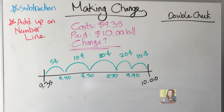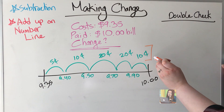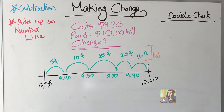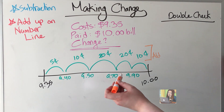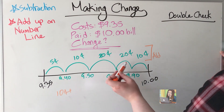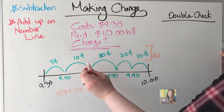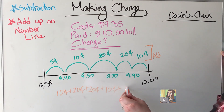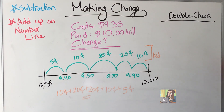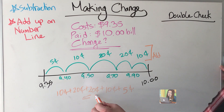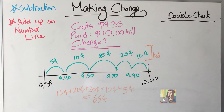Now I take all the numbers from those jumps and add them up — that total is the change. So: ten cents plus twenty cents plus twenty cents plus ten cents plus five cents. Ten plus twenty is thirty, plus twenty is fifty, plus ten is sixty, plus five gets me sixty-five cents.